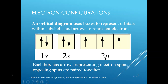The orbital diagram gives more information than SPDF notation — it tells you exactly how the electrons are spinning and which specific orbitals are occupied. Whenever you have two electrons occupying the same orbital, they cannot both spin in the same direction; the two electrons must be spinning in opposite directions.